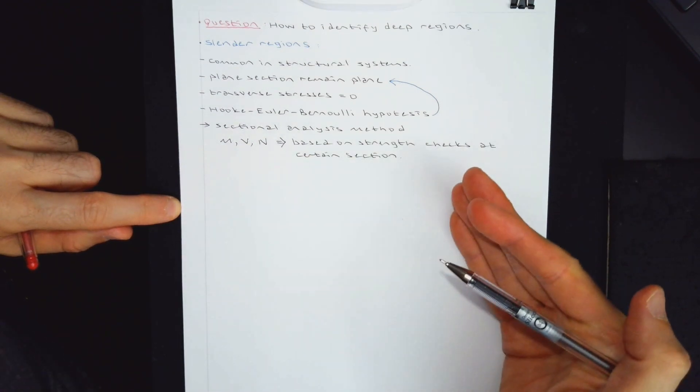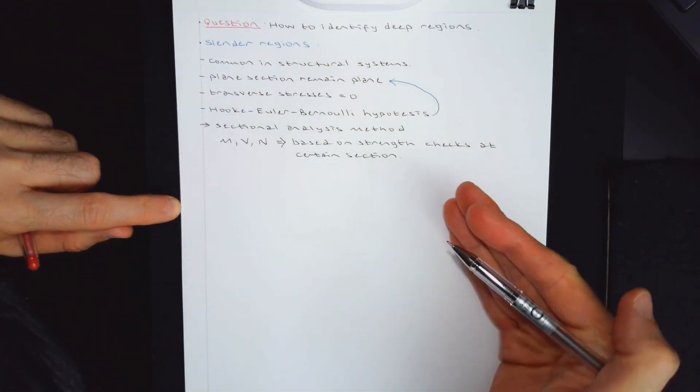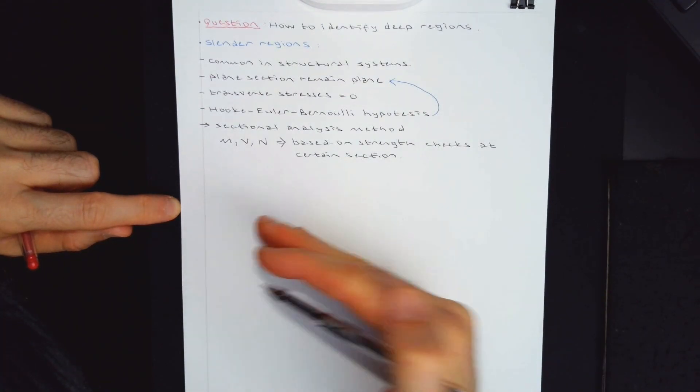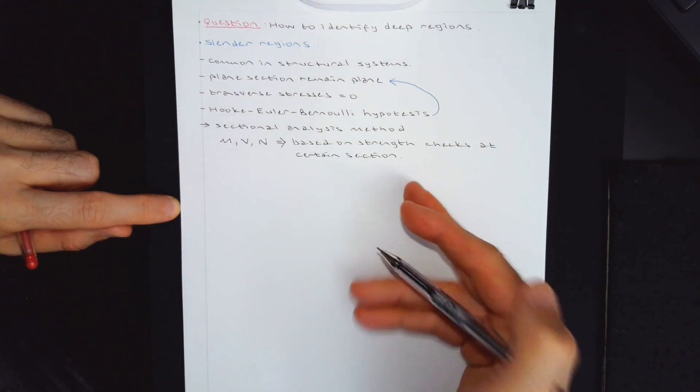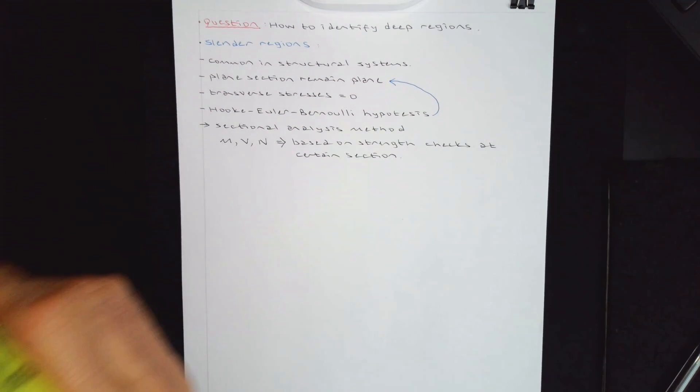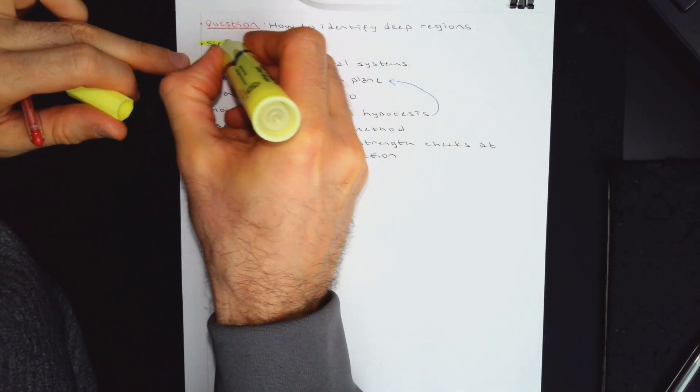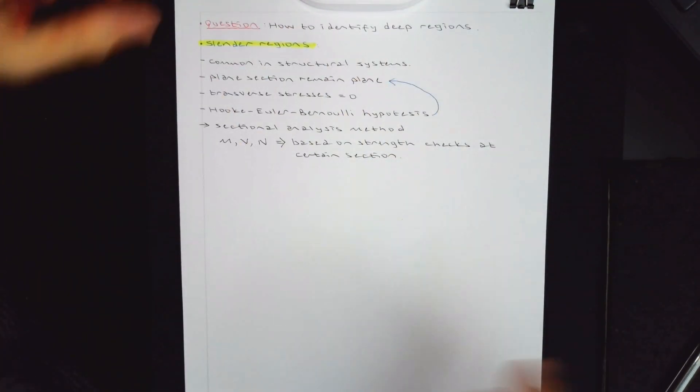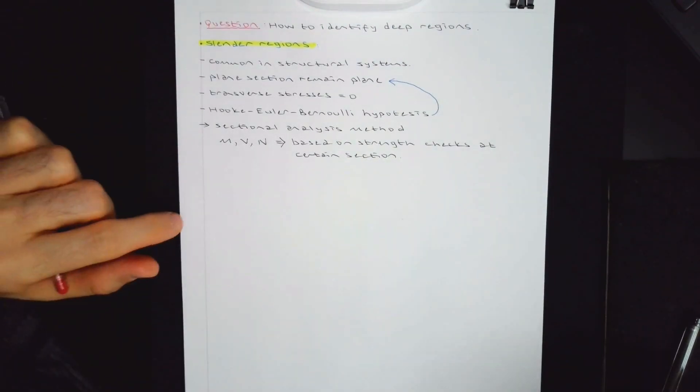Determine the most critical sections, and you do your moment strength check or moment design or flexure design, or you do your shear strength check or shear design at those certain sections, and you complete your process. So this is pretty much what we do. Relatively easy to do. We use computer programs. They are all based on this concept, right?